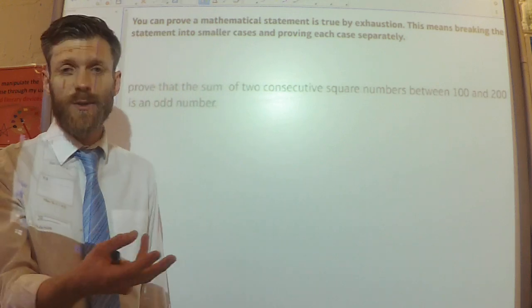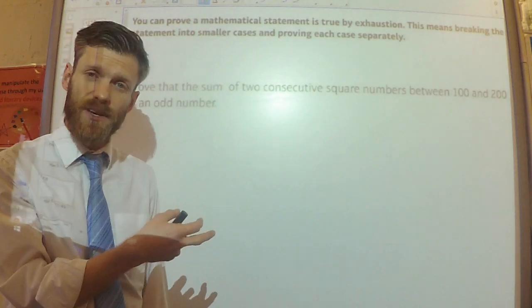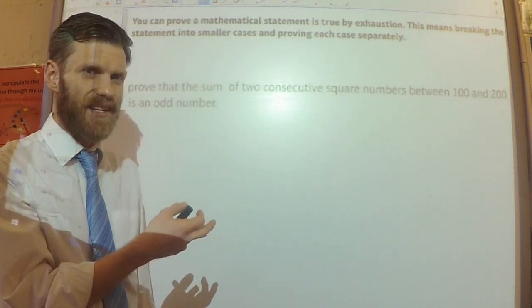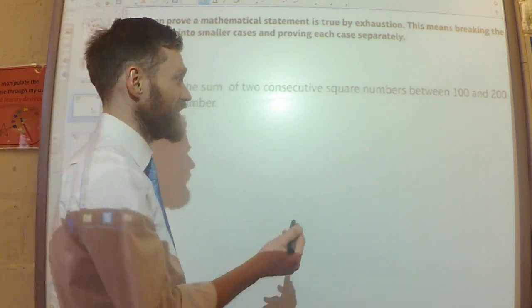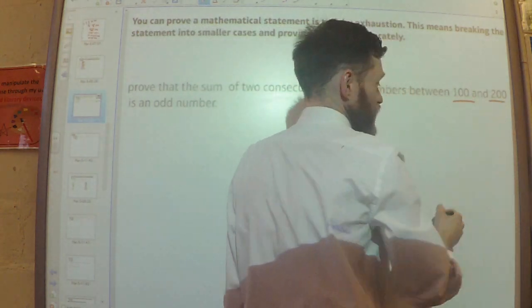Now, I'm going to use proof by exhaustion to do this because there is a limited number of numbers that I actually have to try here. There aren't very many square numbers that are between 100 and 200.